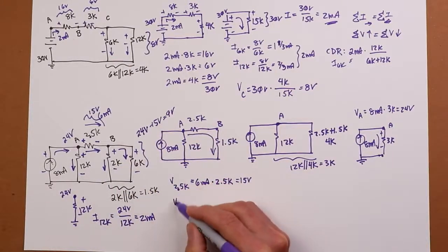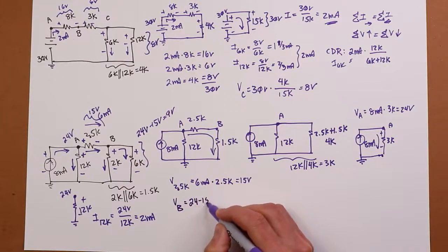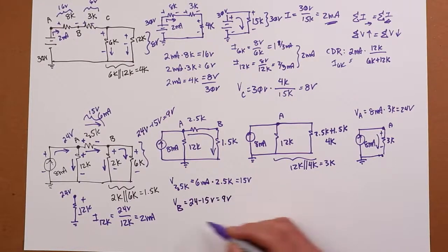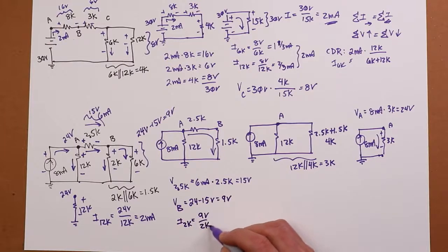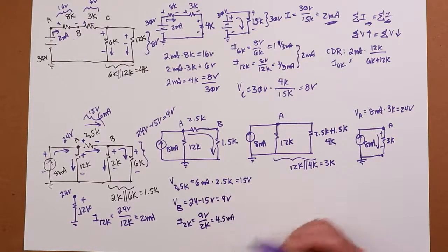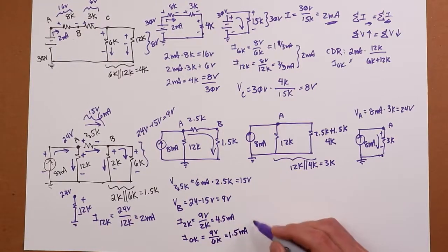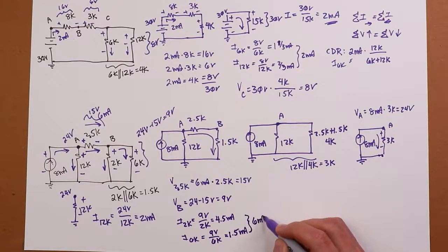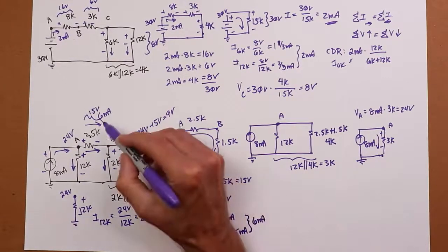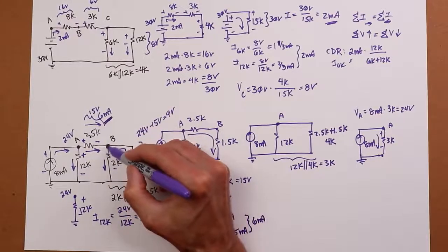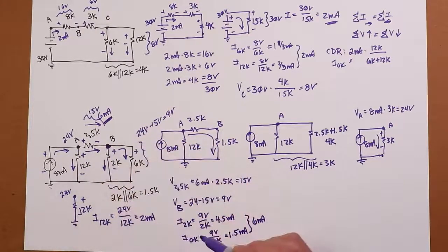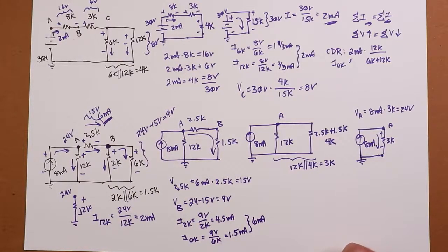Now that you know it's 9 volts, you can use Ohm's law to find these two currents. All right, so we know VB now is 24 minus 15, or 9 volts. And now I can use Ohm's law, so the current through the 2K would have to be 9 volts over 2K, which is 4 1/2 mils. Similarly, the current through the 6K would be 9 volts over 6K, which is 1 1/2 mils. That adds up to 6 mils. Why is that important? Because that's the current we know was going through the 2 1/2. Kirchhoff's current law, node B, what comes in, 6, has to equal what exits 4 1/2 plus 1 1/2.